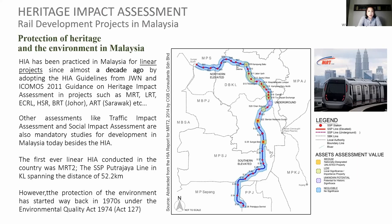The first ever linear HIA conducted in the country was the MRT2, which is the SSP Putrajaya Line in KL, spanning a distance of 52.2 kilometers. The picture on the right shows the alignment that was studied. Environmental protection in Malaysia started back in the 1970s — so we are talking about 50 years of protecting the environment, and HIA is almost one decade. Malaysia is also carrying out HIA, SIA (Social Impact Assessment), TIA, and other impact assessment studies for all development projects.